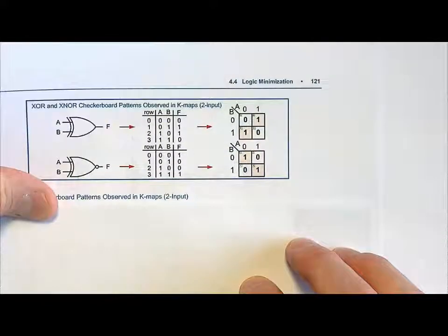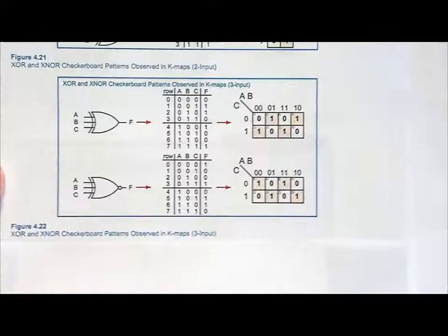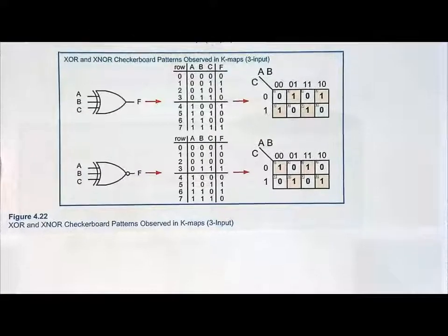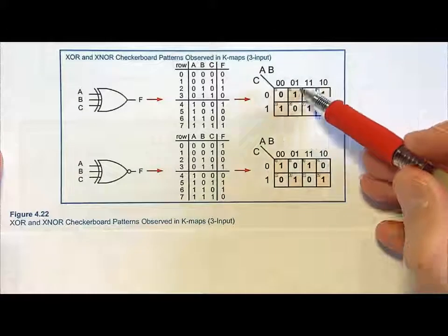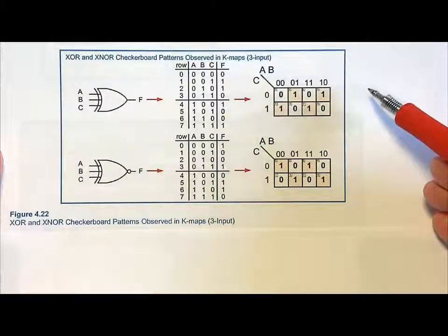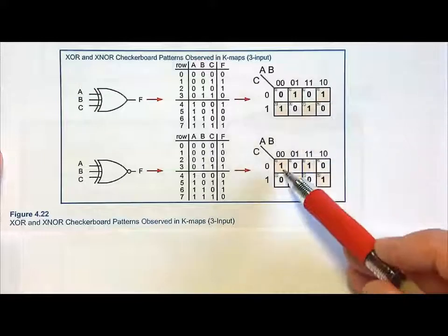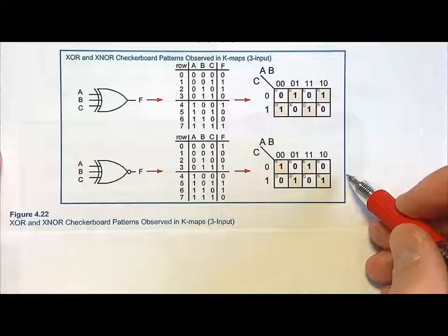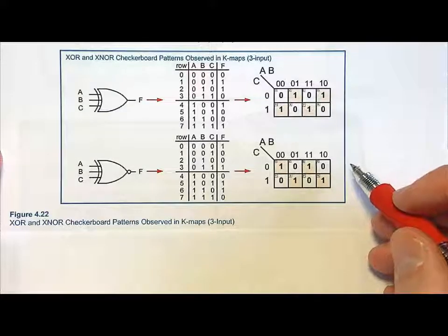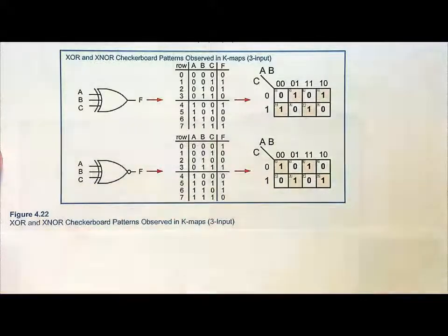What does a 3-input exclusive OR gate look like? It turns out the 3-input also has a checkerboard pattern. The checkerboard pattern in this situation has this form, and that's a 3-input exclusive OR. A 3-input exclusive NOR would look similar but inverted. Anytime we see something like that, we can't minimize it using the K-map approach, but you can replace it with a 3-input exclusive NOR or exclusive OR gate.